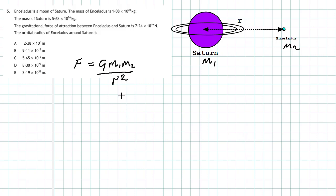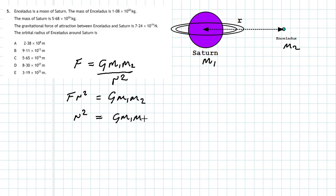Now we rearrange the universal law of gravitation to get R on its own. Cross-multiplying gives F times R squared equals G times M1 times M2. Rearranging, R squared equals G M1 M2 divided by F. Since we want R and not R squared, we take the square root: R equals the square root of G M1 M2 all over F.